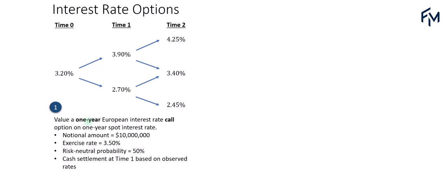For a call option expiring in one year, we only need the interest rate up to time one. At time one when the call option expires, we calculate the payoff at each node. At node C+, for the higher interest rate of 3.9%, the option payoff is the maximum of zero and the higher spot rate minus the exercise rate: maximum of zero and 3.9% minus 3.5%, which equals 0.4%.